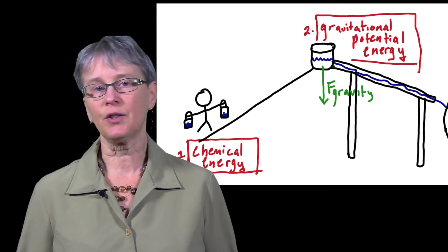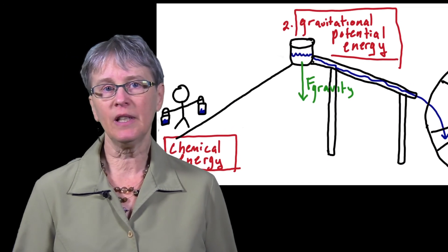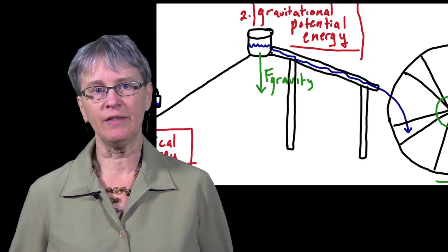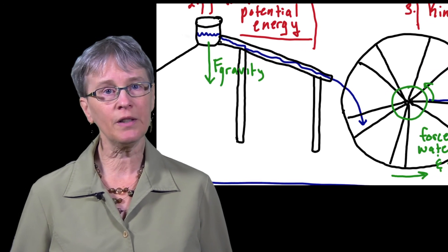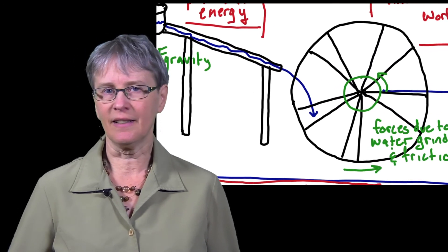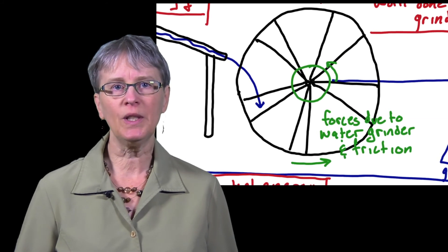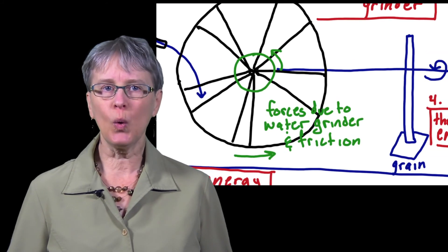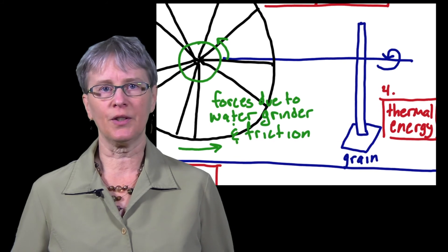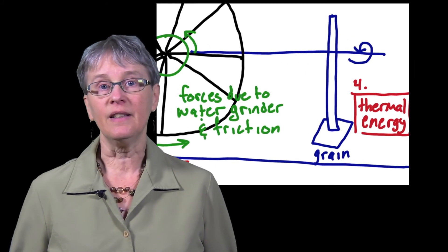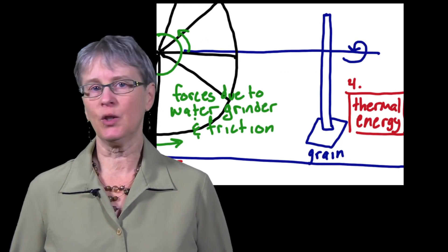Looking at this process in terms of energy, the chemical energy in the person is converted into gravitational potential energy of the water, which is then converted into kinetic energy of the water and the wheel and the grinders, as well as work done by the grinders on the grain. Finally, the energy ends up as thermal energy in the wheel and the grain.